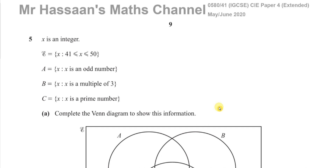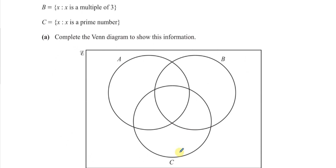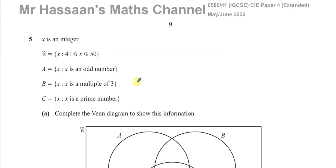This question is about Venn diagrams. It tells us that x is an integer — a whole number, positive or negative. The universal set, which means all the numbers we are considering in this question, represented in this big rectangle, are all the integers from 41 to 50, including 41 and 50.